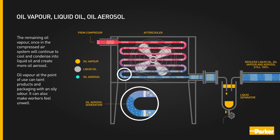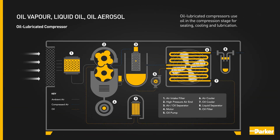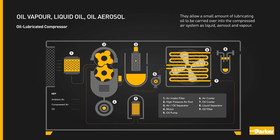The remaining oil vapour, once in the compressed air system, will continue to cool and condense into liquid oil and create more oil aerosol. Oil vapour at the point of use can taint products and packaging with an oily odour, and can also make workers feel unwell. Oil lubricated compressors use oil in the compression stage for sealing, cooling and lubrication. They allow a small amount of lubricating oil to be carried over into the compressed air system as liquid, aerosol and vapour.